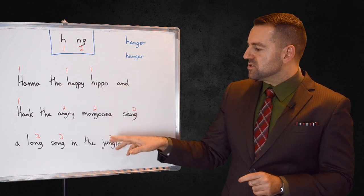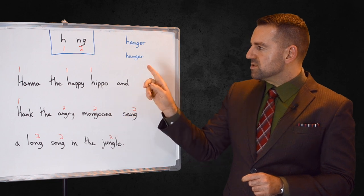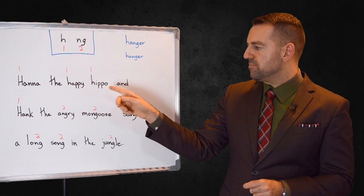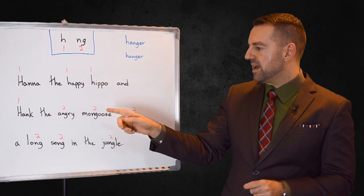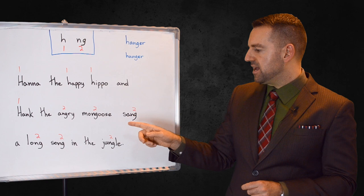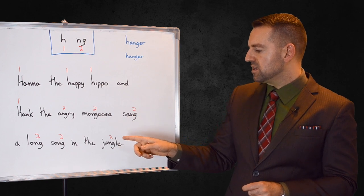Okay, so let's read this sentence. And then I want to show you something about this sound here. So Hannah the happy hippo and Hank the angry mongoose sang a long song in the jungle.